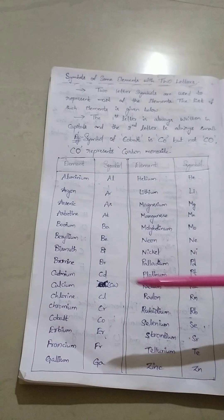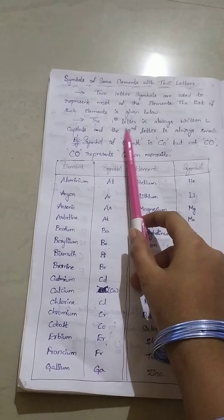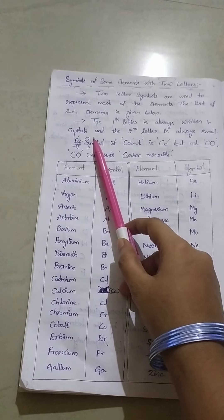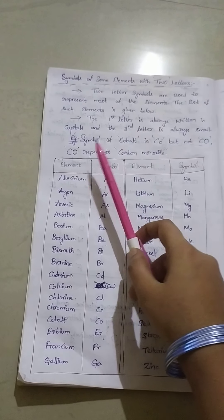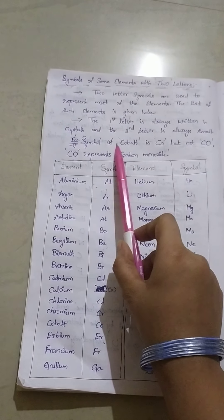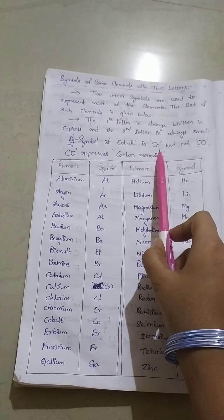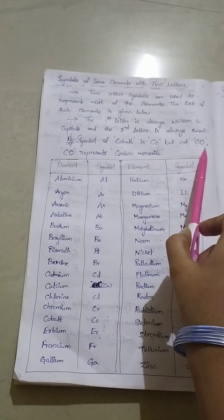Here are a few elements in a list which has two letters. The first letter is always written in capitals and the second letter is always small. First letter should always be in capitals. For example, the symbol of cobalt is capital C and small O, but not capital C and capital O.